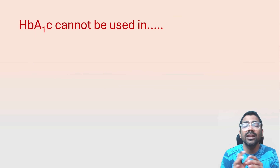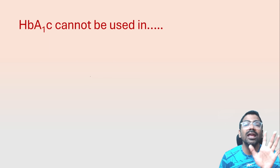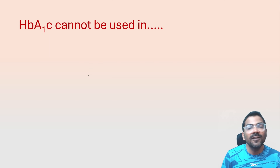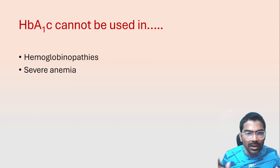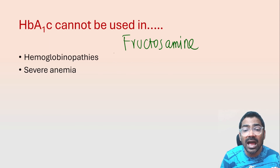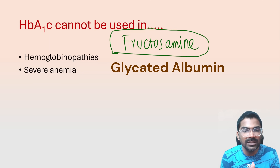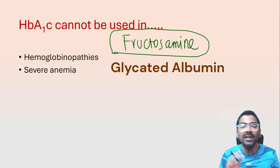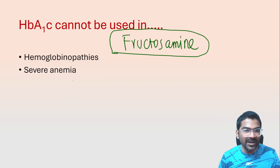There are certain conditions in which HbA1c cannot be used. Since HbA1c is the percentage of glycated hemoglobin, whenever the level of hemoglobin is altered — as in hemoglobinopathies or severe anemia — you cannot use HbA1c. An alternative is fructosamine, which is glycated albumin, but fructosamine indicates only short-term glycemic control, not long-term.